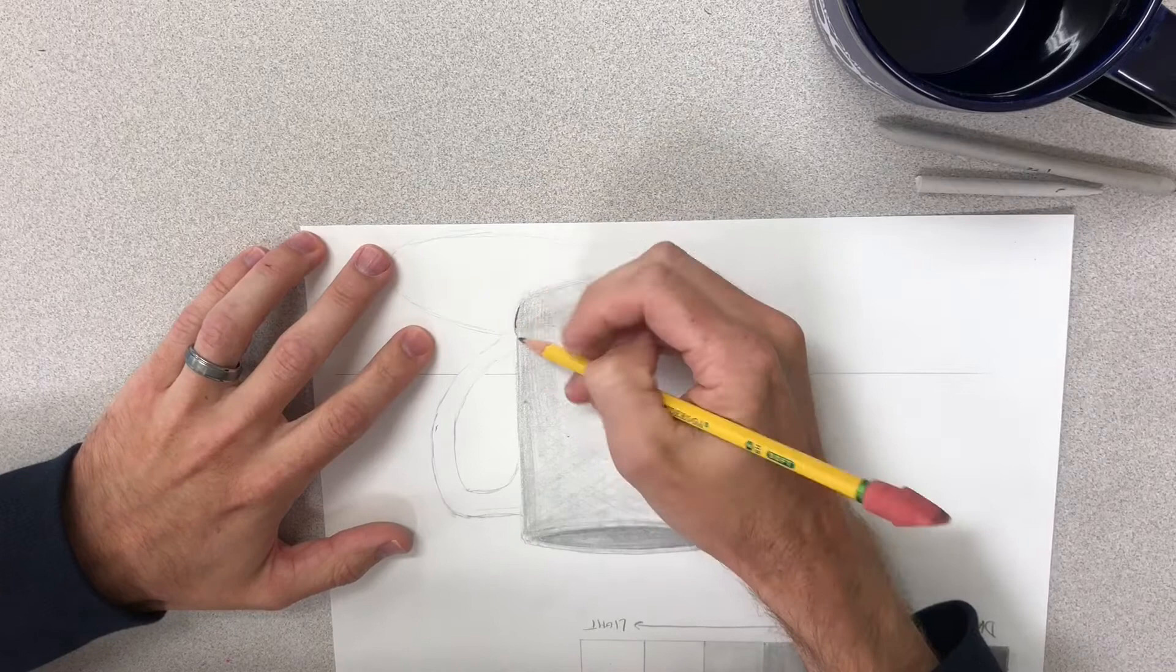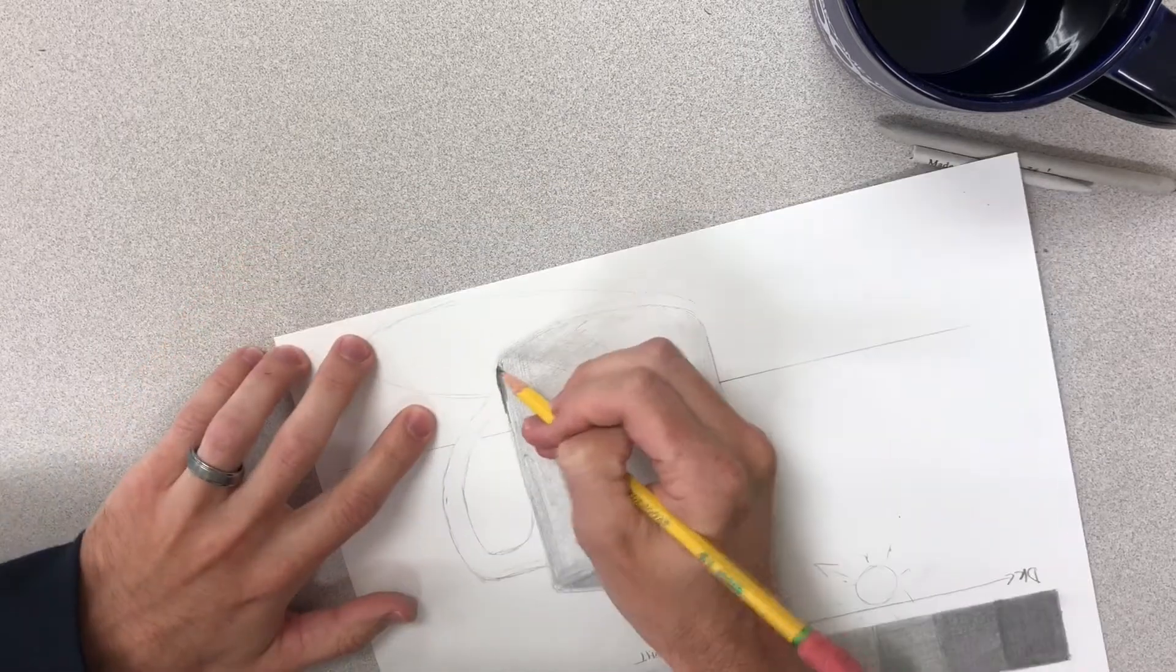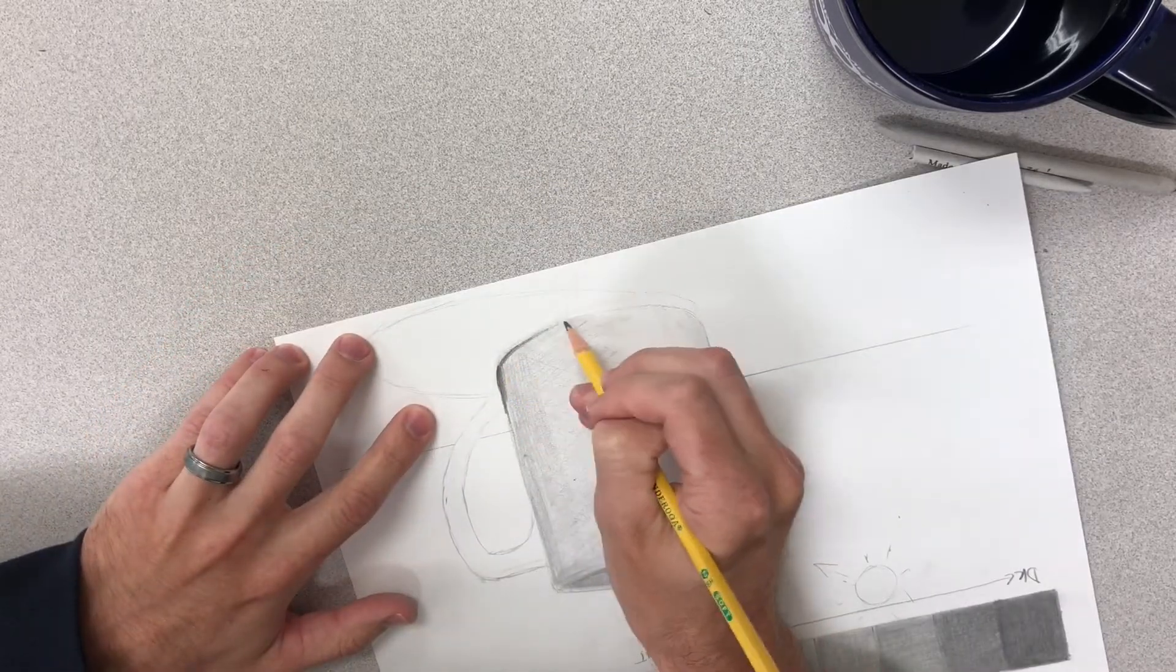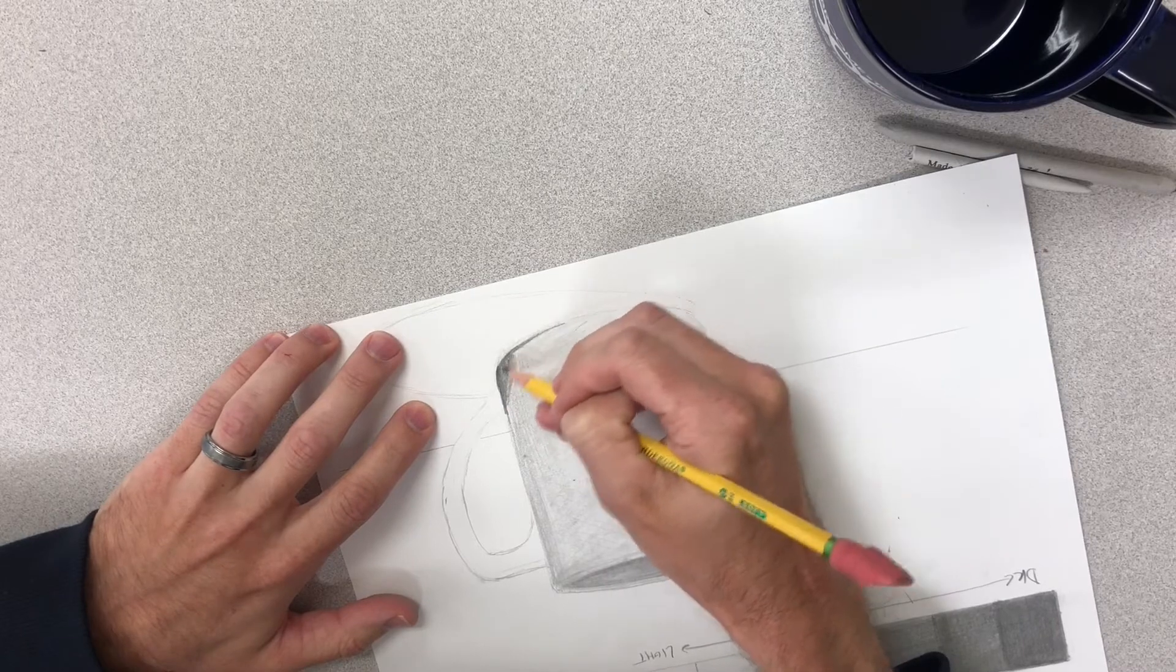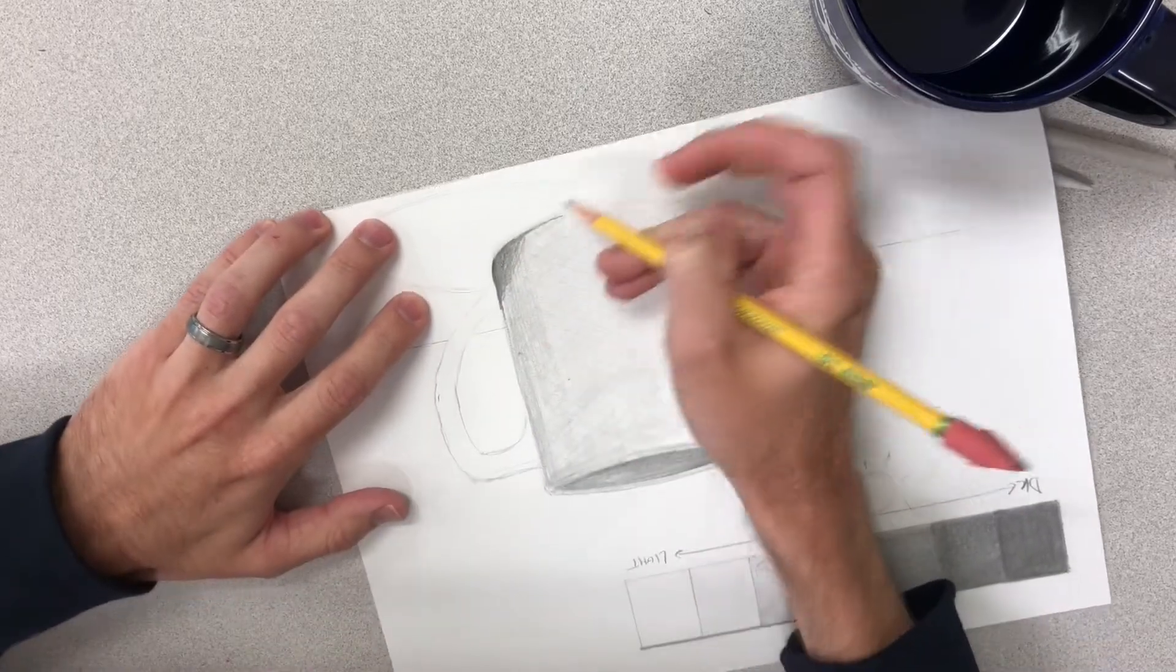And eventually all of these pencil lines are going to be gone. But this is just the fastest way for me to lay down some color. I'm just going to crisscross and bring some color over. Okay, now we're going to go darker. I'm going to worry about the handle later, making that look like it falls in. So this side is going to be the darkest out of all of it.